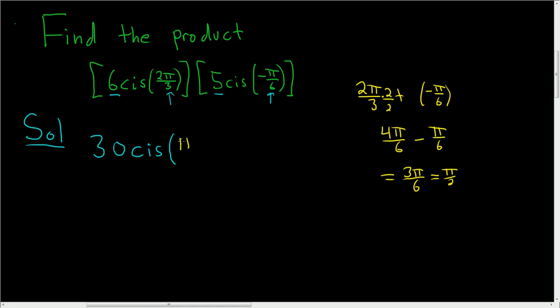So this is the cis of π over 2. So this is 30. Now cis, this stands for cosine i sine. So it's cosine of π over 2 plus i sine of π over 2.